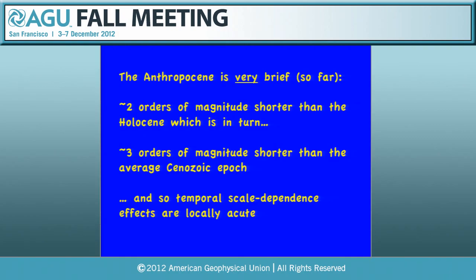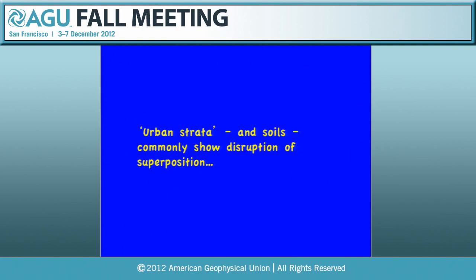The Anthropocene is incredibly short geologically. In Paul Crutzen's early version it is from about 1800 — that is 200-something years. It may even be from the mid-20th century, where there's a good signal suggesting a big change. So it is much shorter than the Holocene, which in turn is much, much shorter than any other epoch in geology. That means that scale-dependent disruption of time signals in rock are acute.